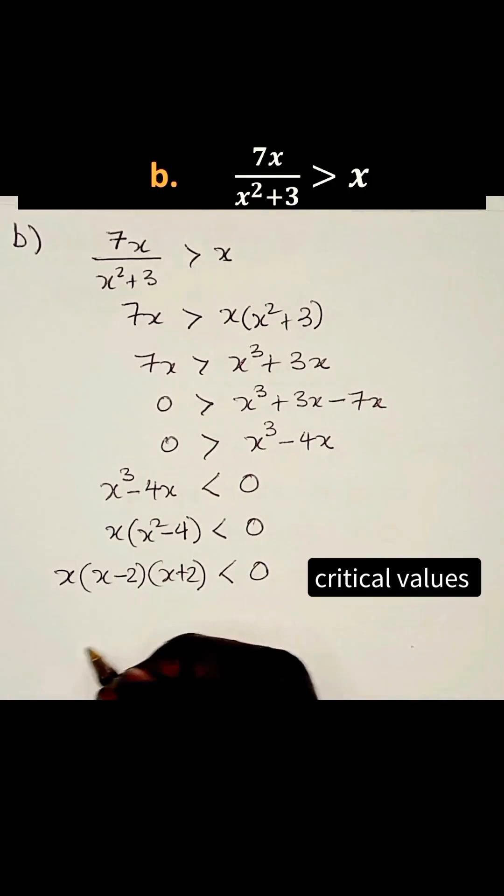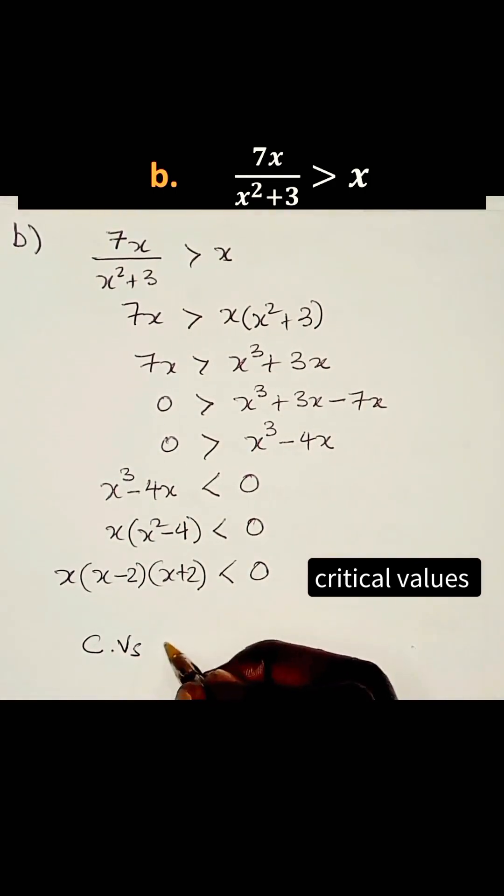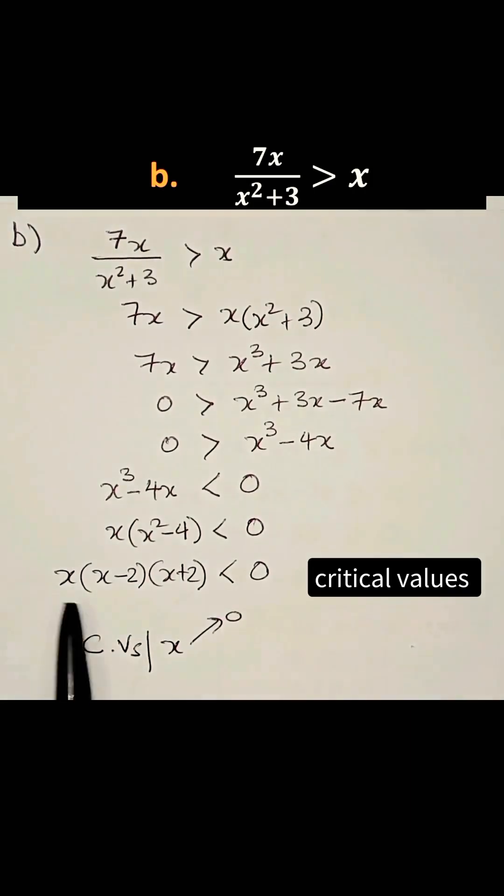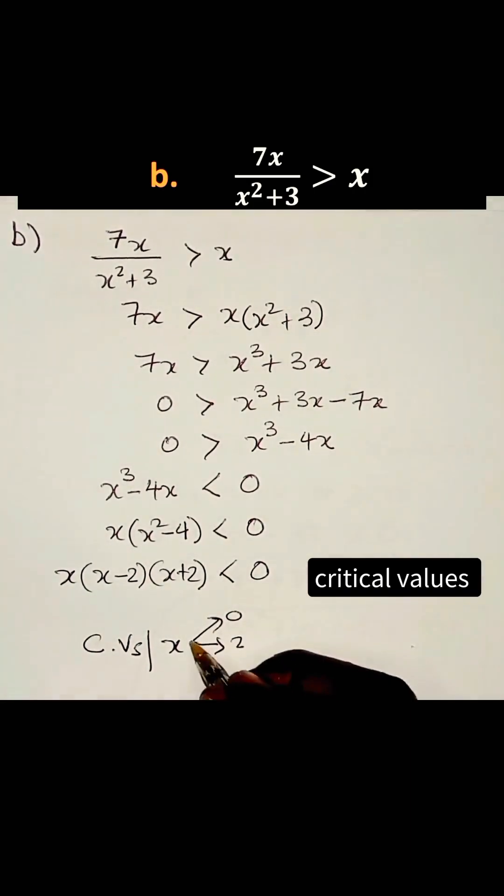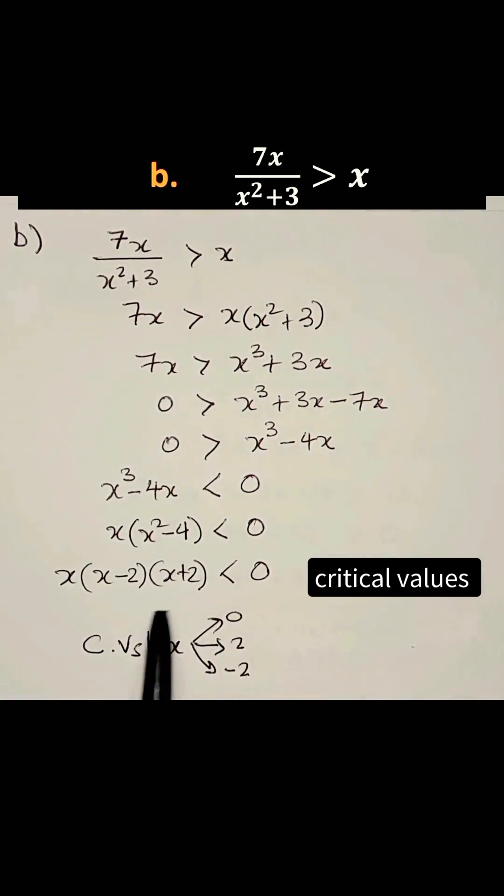Now we have the critical values, which I'll abbreviate as CVs. They are x = 0 for this, x = 2 for that, and x = -2 for that.